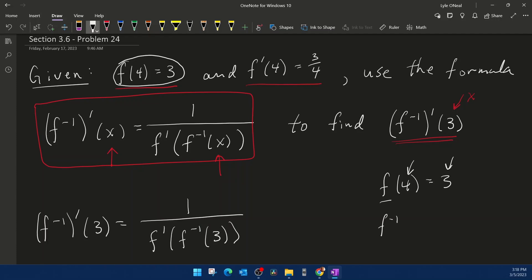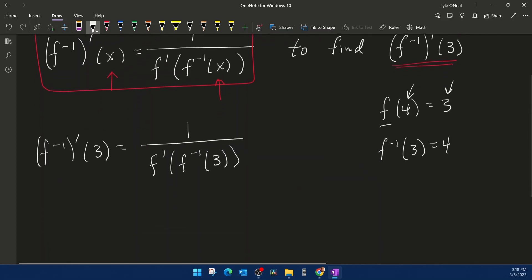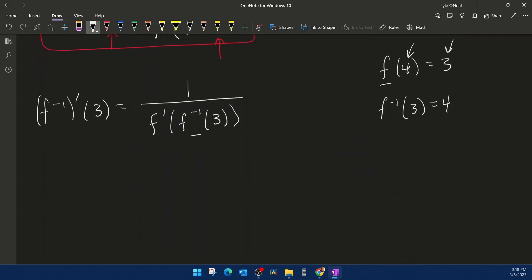Therefore, we can conclude that f inverse of 3 would be 4. And what that does is it allows us to now substitute for this piece right here.